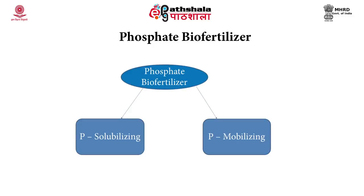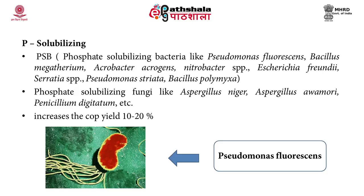Phosphate biofertilizers are of two types: P-solubilizing (PSBs — Phosphate Solubilizing Bacteria) and P-mobilizing. Examples of PSBs are Pseudomonas, Bacillus, Agrobacter, Pseudomonas striata, and Bacillus polymyxa. They convert the inorganic form of phosphate in the soil into organic form via certain enzymes, making it available for plant growth. Phosphate solubilizing fungi include Aspergillus niger, Aspergillus awamori, and Penicillium. PSBs increase crop yield by 10 to 20%.